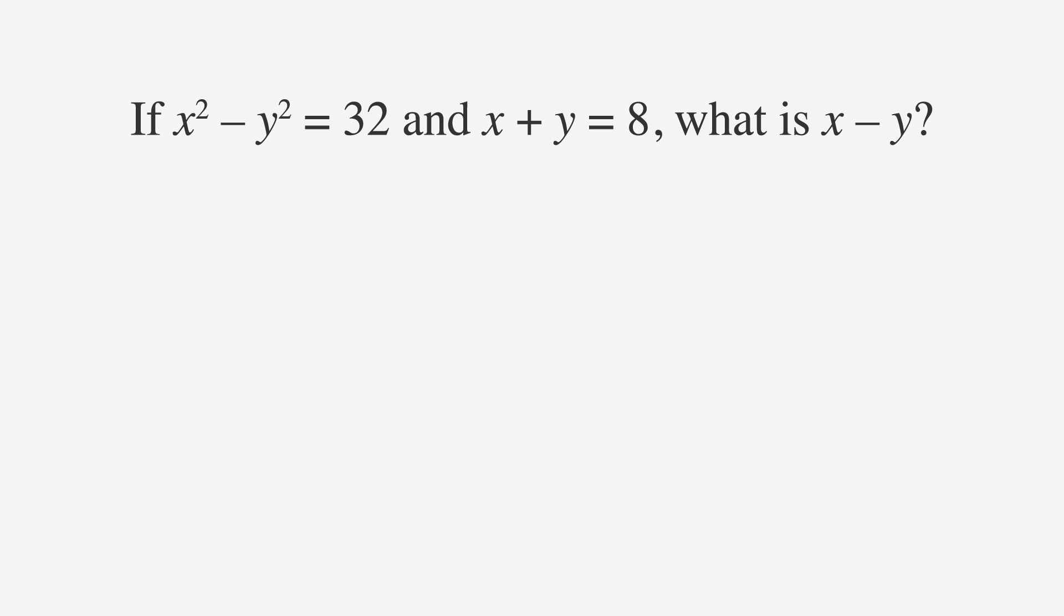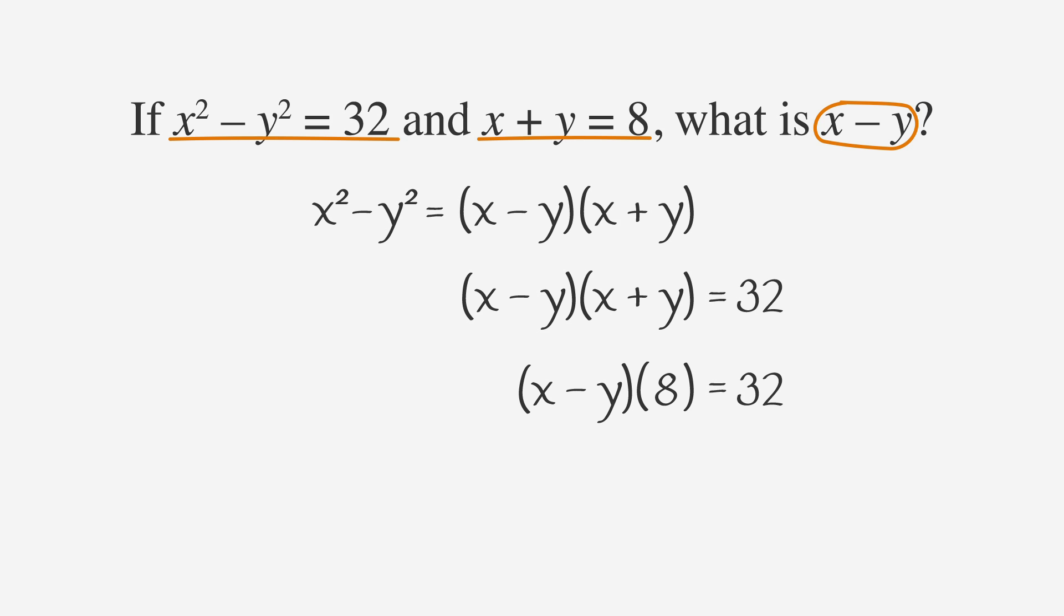Let's look at this SAT problem that involves knowing the factored form of the difference of two perfect squares. If x² minus y² equals 32 and x plus y equals 8, what is x minus y? We don't have any answer choices, so this must be a grid-in. First, underline the facts and circle the keywords of the question. Remember the factors of the difference of two squares: x² minus y² is the quantity x minus y times the quantity x plus y. x² minus y² is 32. Therefore, the quantity x minus y times the quantity x plus y is also 32. Substituting 8 for the quantity x plus y, we can now find x minus y. Let's look at this expression and think, what times 8 equals 32? We know that 4 times 8 equals 32, so x minus y must equal 4.